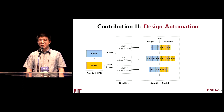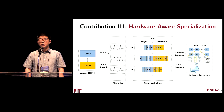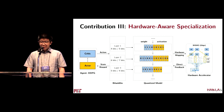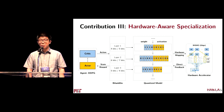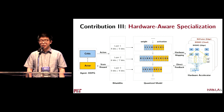Apart from mixed precision and design automation, another contribution is hardware-aware specialization. This is very critical, as different hardwares might have different properties. Therefore, the optimal solution on one hardware might not be optimal on another. In our framework, we incorporate the hardware accelerator directly into the optimization loop. The hardware simulator provides latency and energy feedbacks measured on the hardware to the RL agent. If we have different hardwares, our HAQ framework can offer a specialized quantization solution particular to each of them.